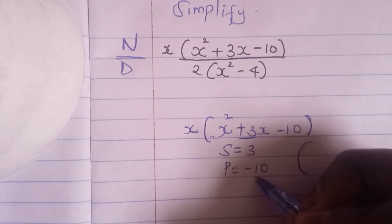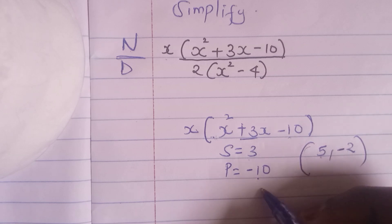I'll look for two numbers when I multiply them both, I am getting negative 10. When I add the two numbers, I'm getting 3. So my two numbers are 5 and negative 2. If I add 5 plus negative 2, I am getting 3. If I multiply 5 times negative 2, I am getting negative 10. So I'll substitute these two numbers in this equation.